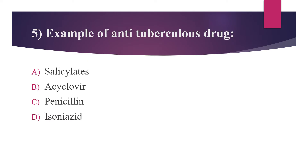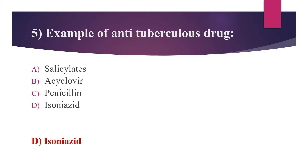Fifth question: an example of an anti-tuberculous drug. Option A: salicylates. Option B: aciclovir. Option C: penicillin. Option D: isoniazid. The answer is option D, isoniazid. Anti-tuberculous drugs are of two types: bactericidal and bacteriostatic. Bactericidal drugs include isoniazid, rifampicin, and pyrazinamide. Bacteriostatic drugs include ethambutol.